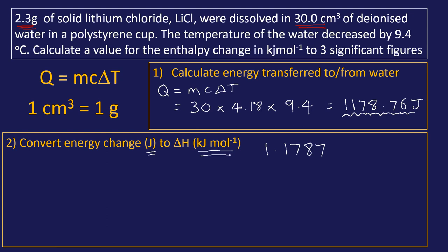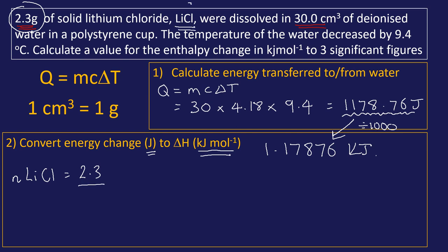Q and ΔH are not the same thing. Q is the energy absorbed or released by the water; ΔH is the change in enthalpy of the chemical system. We need to convert from joules to kilojoules per mole. Step one — divide by 1000: Q = 1.17876 kJ. To get per mole, divide by moles of reactant. Moles of lithium chloride = mass ÷ Mr. Mr of LiCl: Cl = 35.5, Li = 7, so Mr = 42.5. Moles = 0.05411.